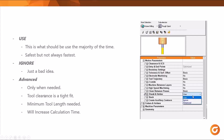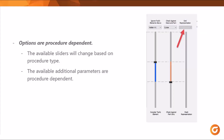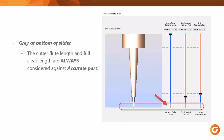This is particularly helpful for tool clearance when it's a tight fit or maybe the Z is too close. Something to keep in mind is that the options are procedure dependent — some sliders, depending on the procedure, may or may not be available. One thing you'll notice when you open the dialog is the gray at the bottom of each slider column. The cutter flute length and the full clear length are always considered against the accurate part, so there is no adjustability here — they're always going to be considered for safety and accuracy.